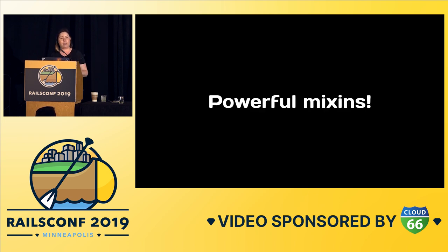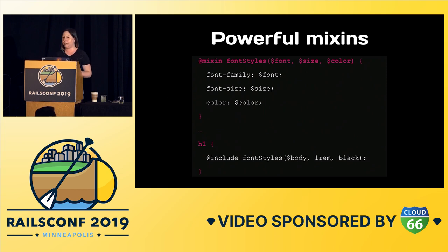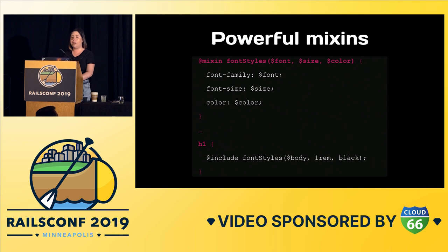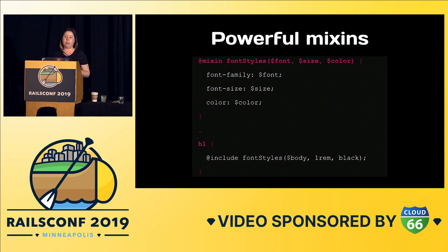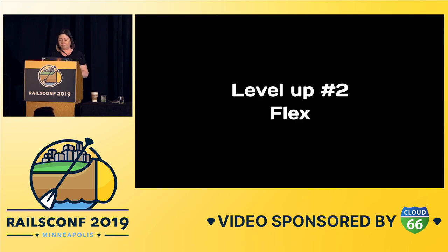I always try to think in terms of powerful mixins — looking for things I can combine to make my life easier. One mixin I typically use a lot in my projects has font-family, font-size, and font-color, so with just one line you can specify all of that. You can even reuse your variables like 'body' and pass in the size and color. That way you've saved yourself three lines of code and turned it into just one.